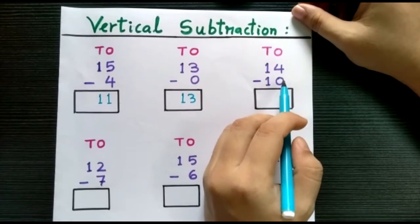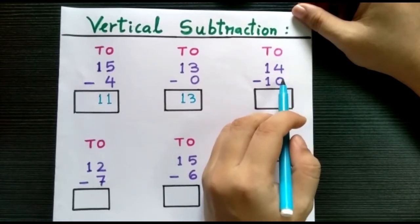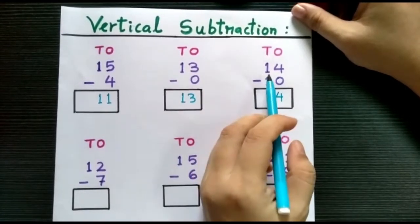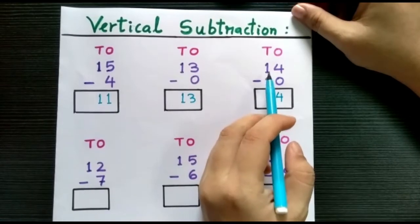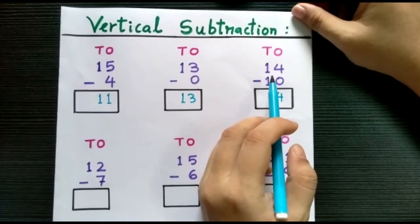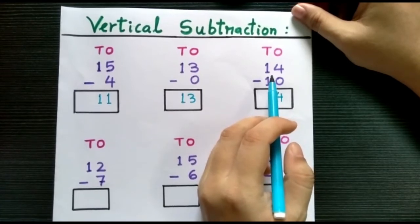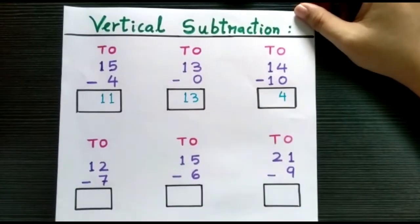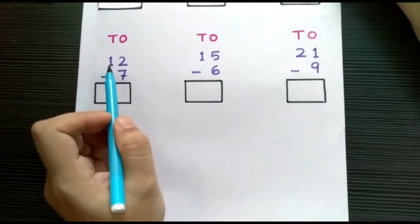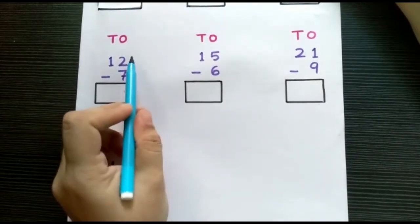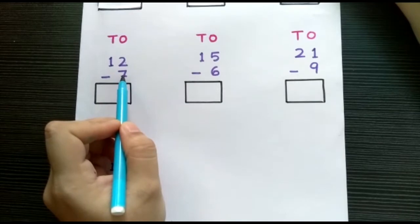Next we have 14 minus 10. In the ones place we have 4 minus 0, which means 4 minus nothing, so it will remain the same number — we will put 4 in the ones place. And in the tens place we have 1 minus 1. If you minus 1 by the same number it will become 0. So 14 minus 10 is 4.